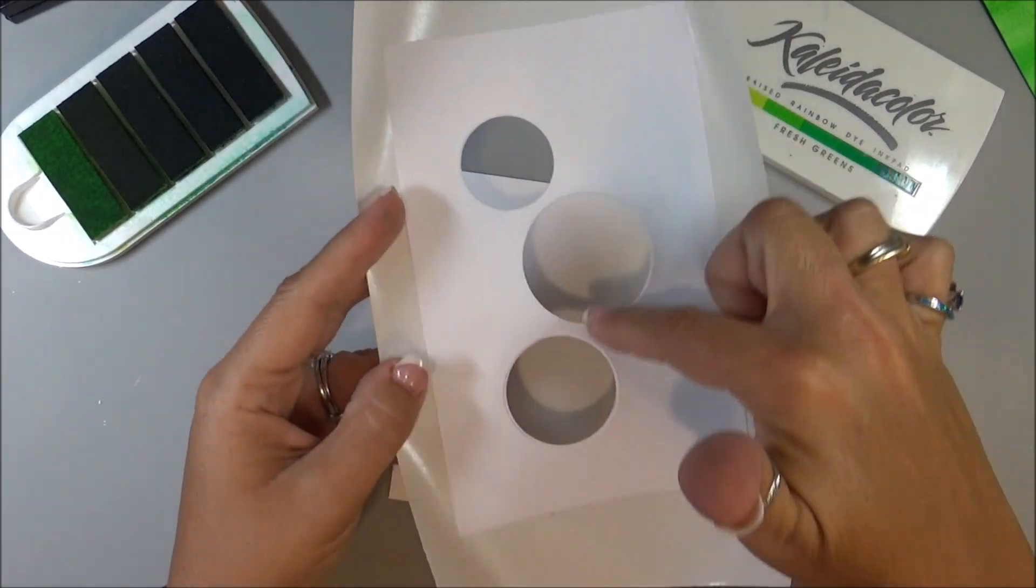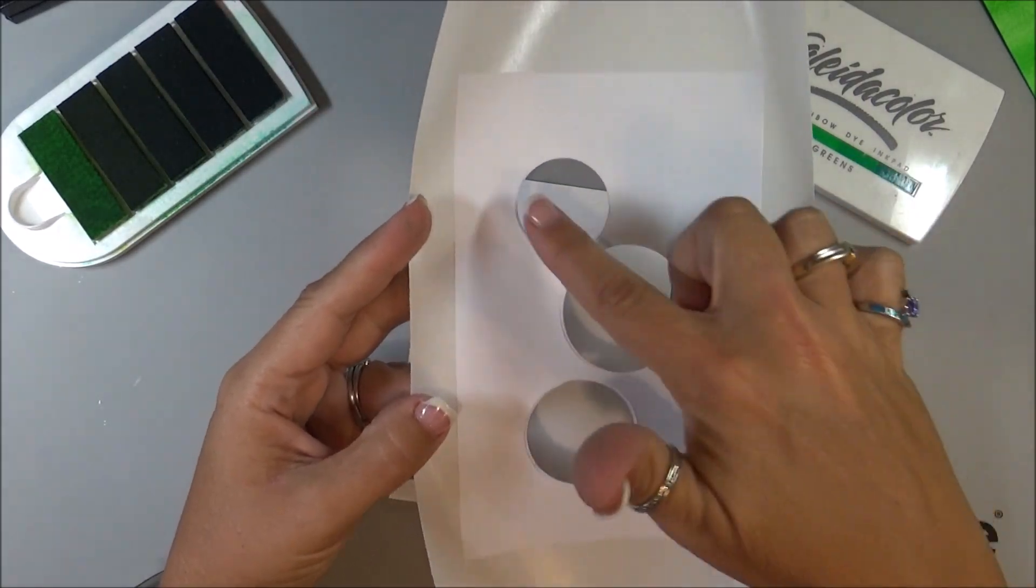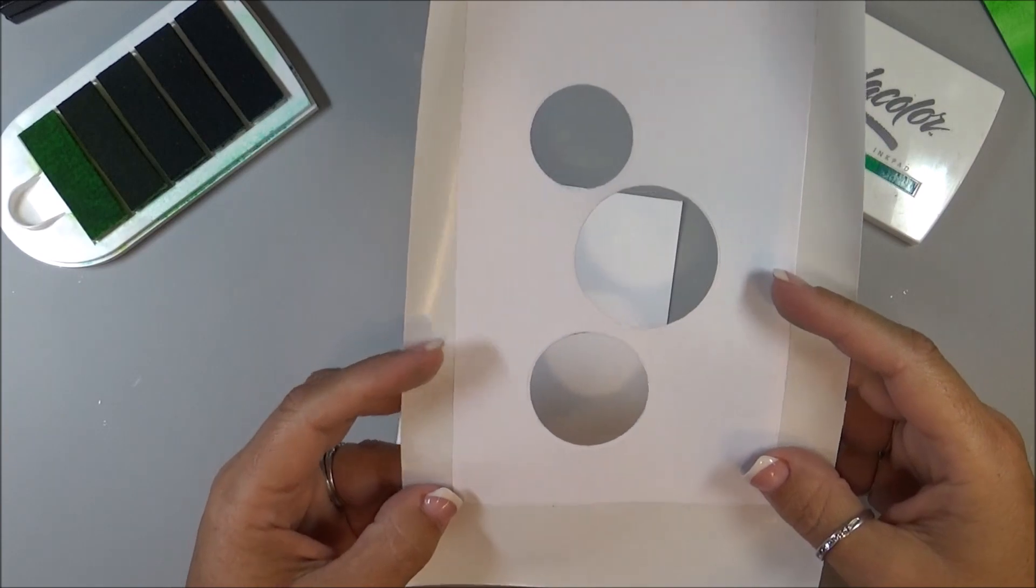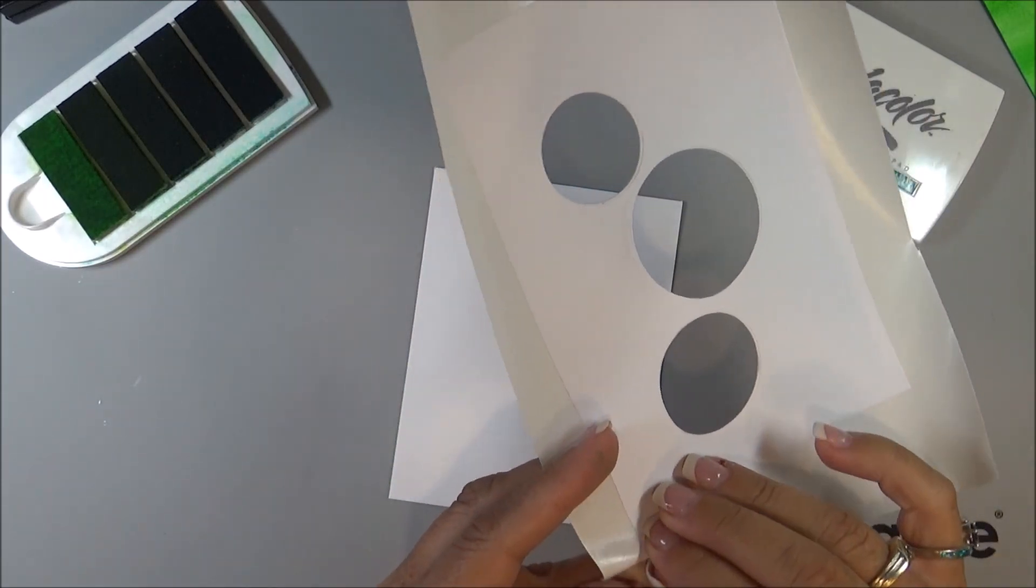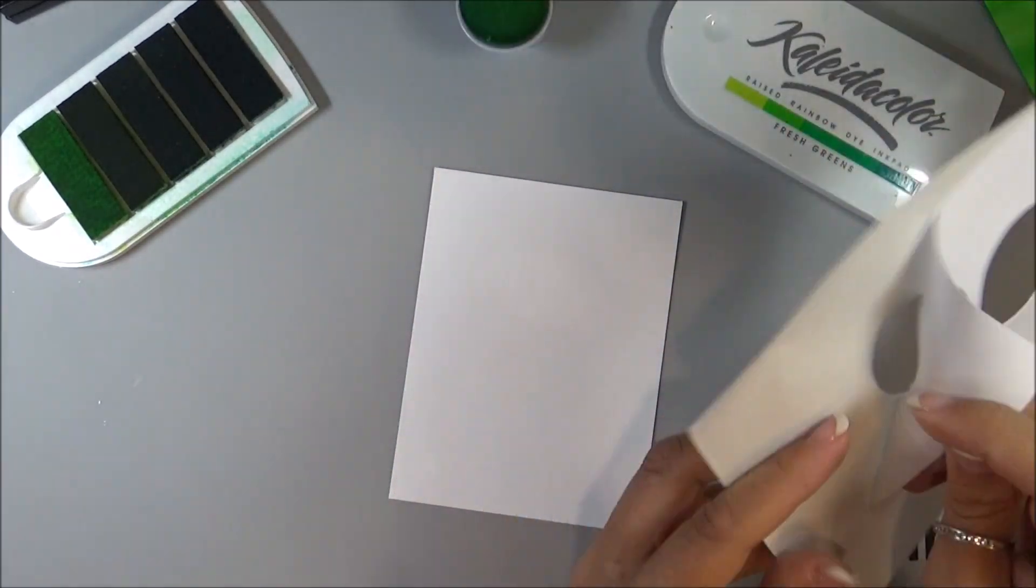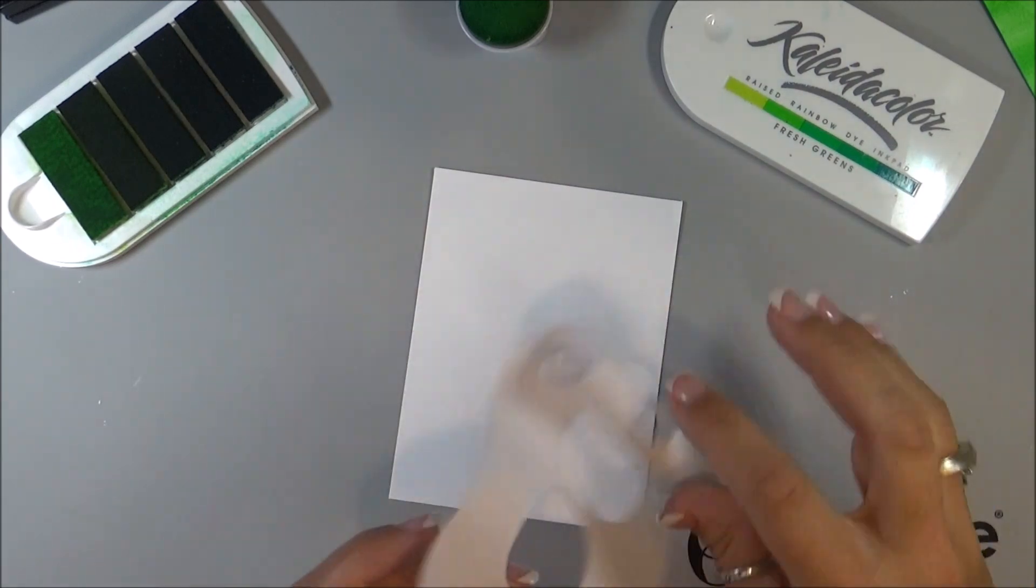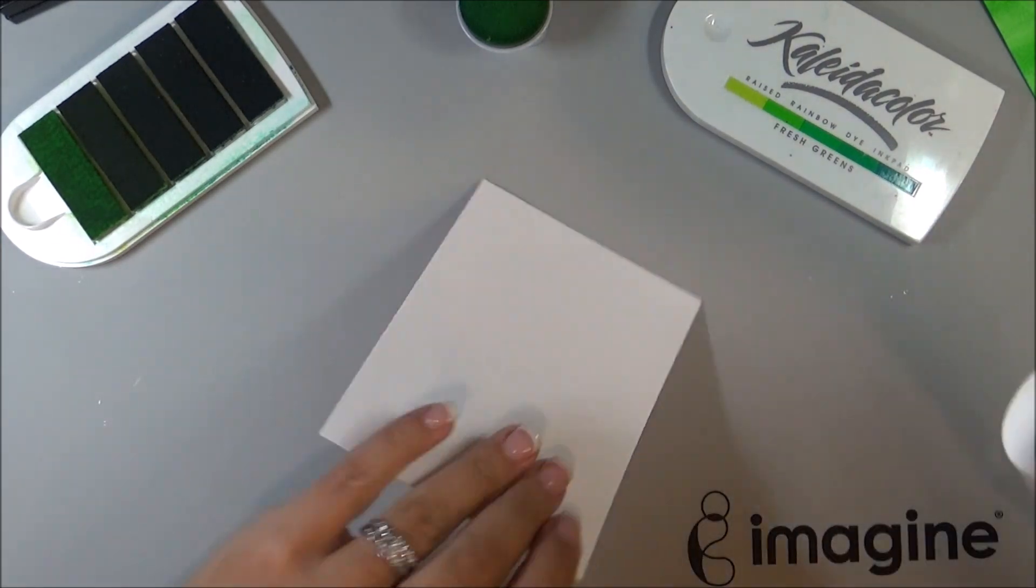And then I punched three different, or die cut, three different size circles out of it. So I'm going to peel this off, and then just lay this down on the front of my card.